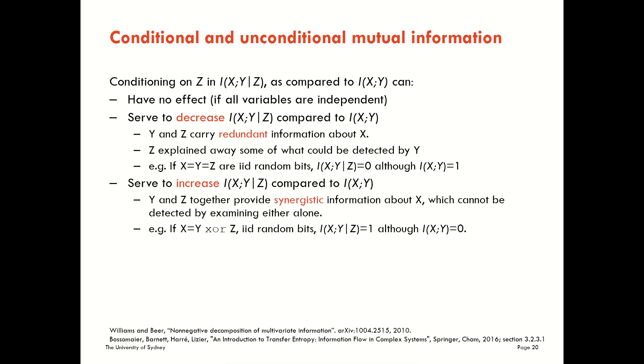A third possibility here is that the conditioning on Z could actually serve to increase the conditional mutual information in comparison to the unconditioned form. What we say has happened here is that Y and Z together provide synergistic information about X, which cannot be detected by examining either alone. The classic example of such synergies is the exclusive or function.